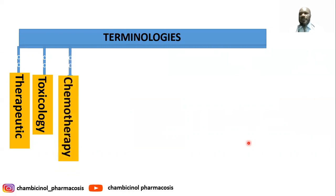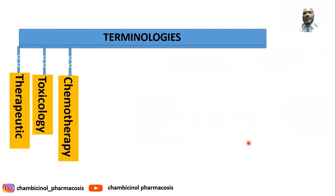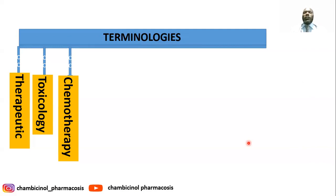We also have chemotherapy, which deals with the treatment of disease, whether by antineoplastic agents — killing cancer cells — or killing microbial organisms with chemical substances. It should have selective toxicity, meaning it kills microorganisms or abnormal cancer cells without killing normal cells.